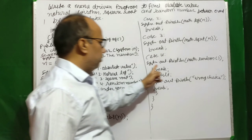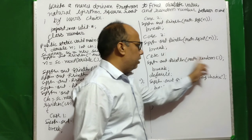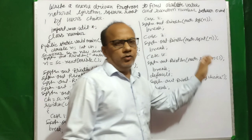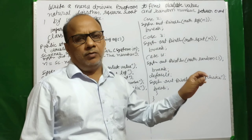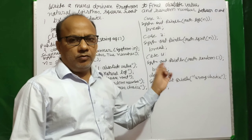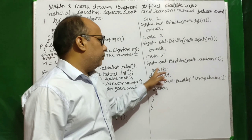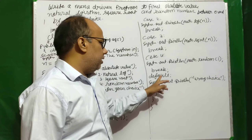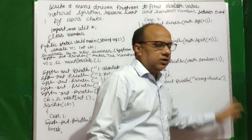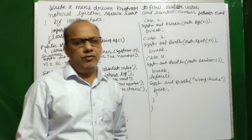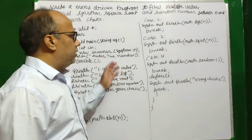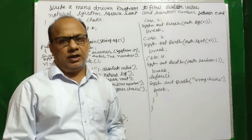यहाँ Math.random() print कराएंगे, तो zero और one के बीच में कोई भी double type की value system खुद print करेगा — यह आपका random function होगा। और default में हमने डाल दिया: wrong choice। इस तरह menu-driven program हुआ।